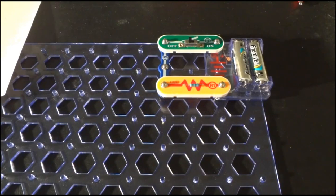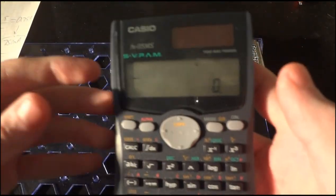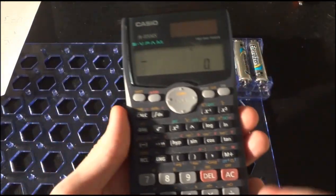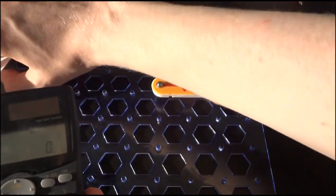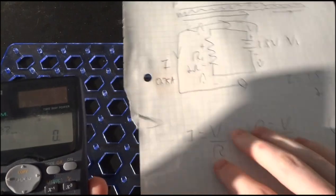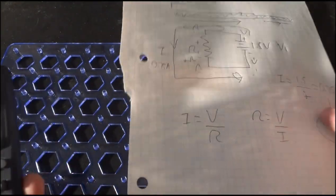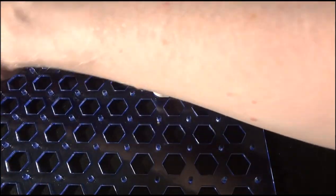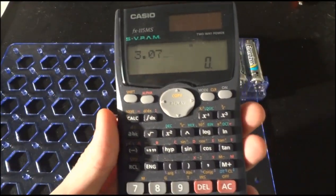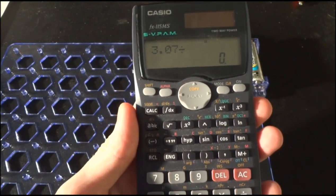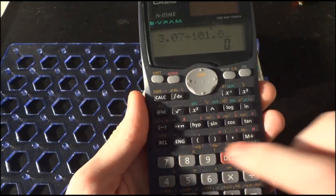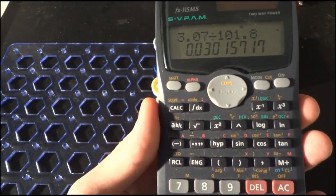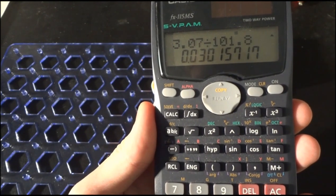Now I find my calculator and the calculator on here. So we measured approximately 3.07 volts. Again, I'm looking for current. So I'm using this version of Ohm's law: I equals V over R. So we've got our voltage, 3.07 volts. We're going to divide that by the resistance we were getting, which was 101.8.